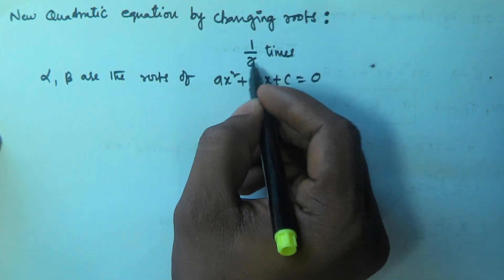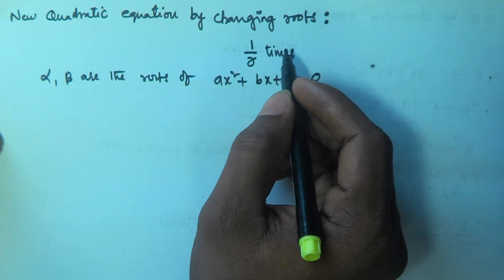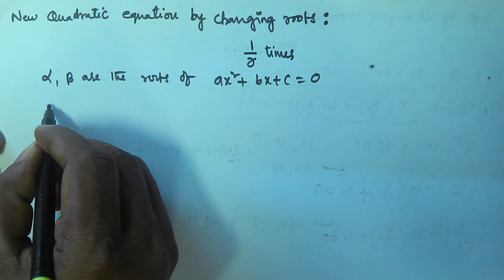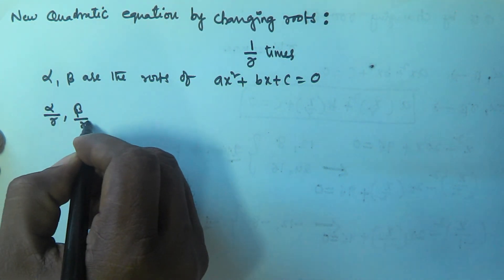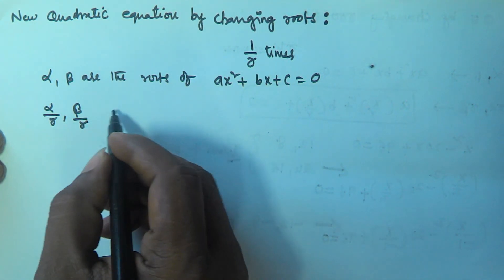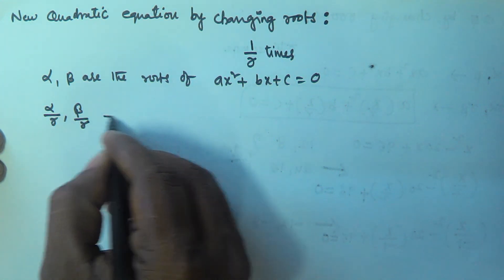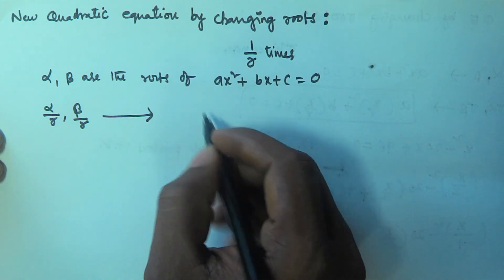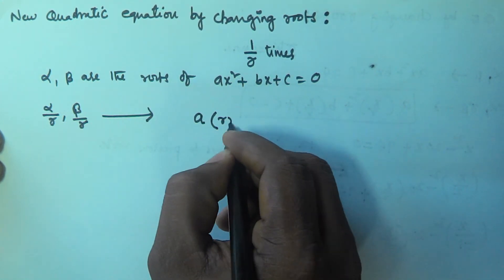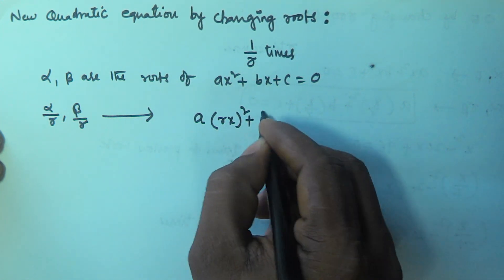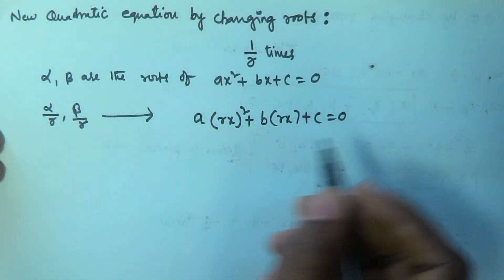If the roots are 1 by r times, then the new roots are going to be alpha by r and beta by r. So the new quadratic equation whose roots are alpha by r, beta by r is given by A of rx squared plus B of rx plus C equals zero.